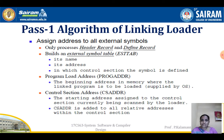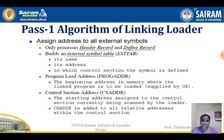Pass 1 only processes the header record and the defined record. We know we have multiple records — header record, text record, end record, modification record, defined record, and refer record — but Pass 1 processes only the header record and defined record because it is going to define the external symbols. The Pass 1 algorithm builds an external symbol table.